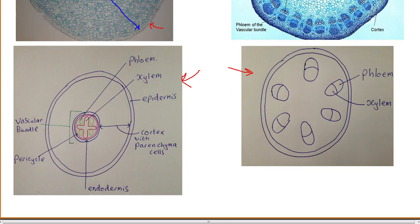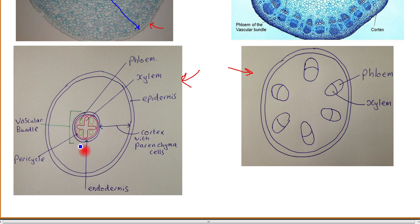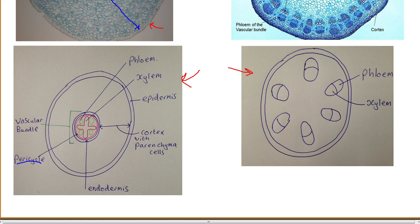In this bottom diagram, that's what I've drawn out. This is something you should be able to do in an exam. All of the labelings are there that I mentioned a moment ago, plus this additional layer in pink. This is a layer of cells located just under the endodermis, and it's called the pericycle layer. So that's the root structure.